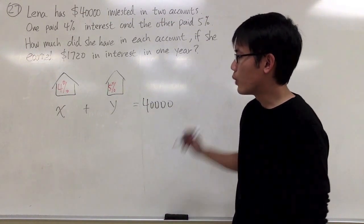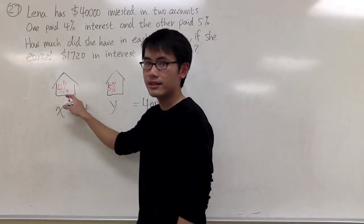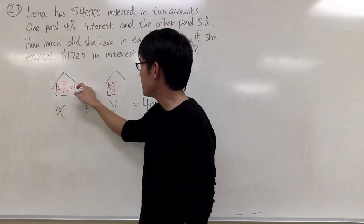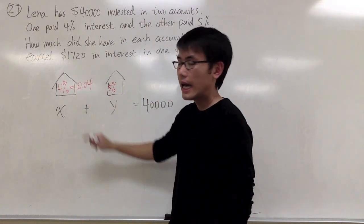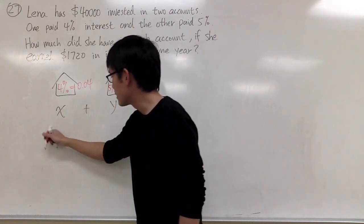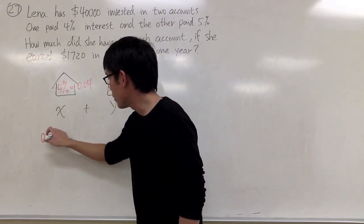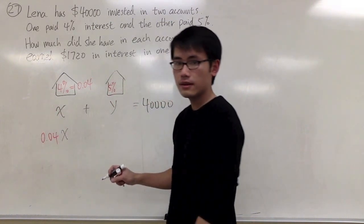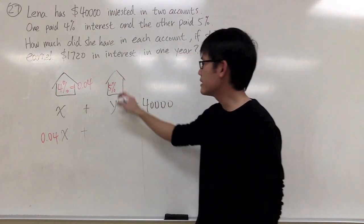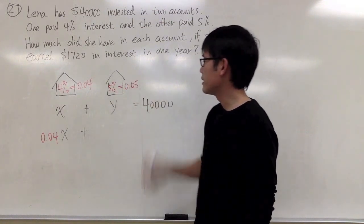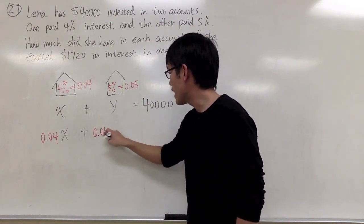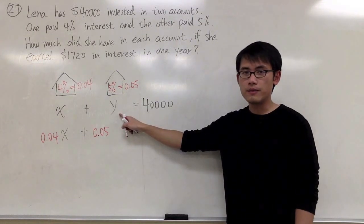To get a second equation, what we're going to do is look at the percentage rate, the interest rate. I will take 4%, and notice that 4% is the same as 0.04. I will take the percentage right here times how much money I put into that account. So the second equation I will get is 0.04 times x. And I'm going to add that with the second account, which is the 5%, I change that to 0.05 as a decimal.